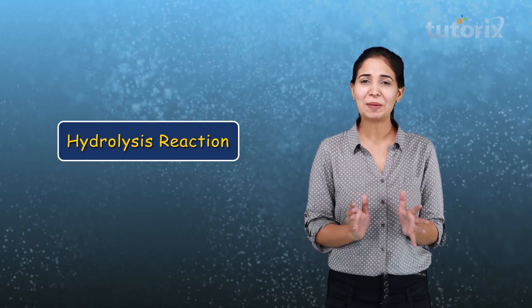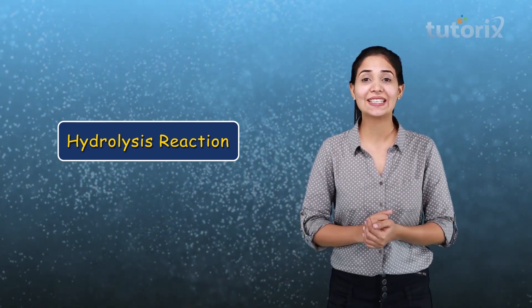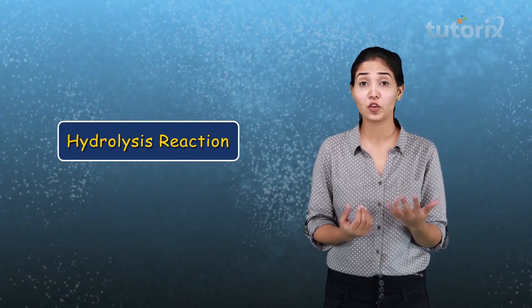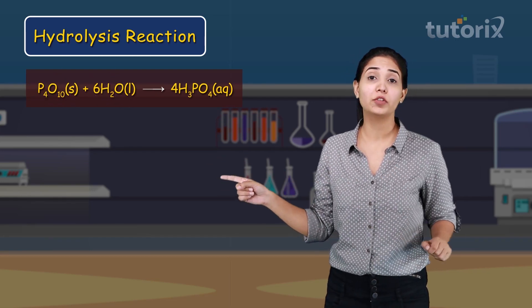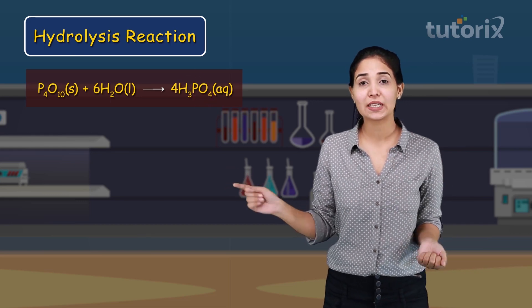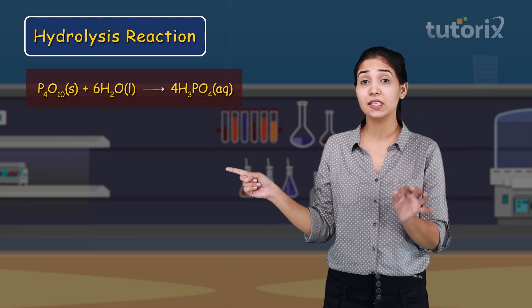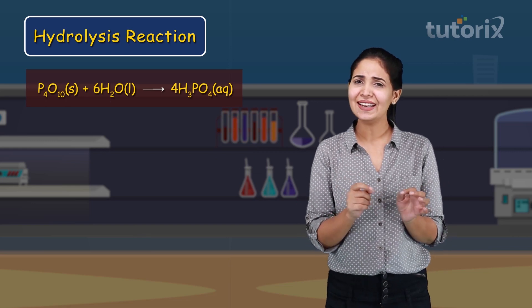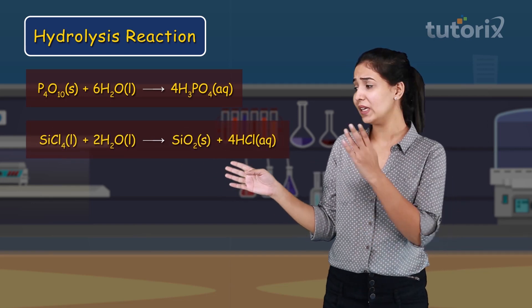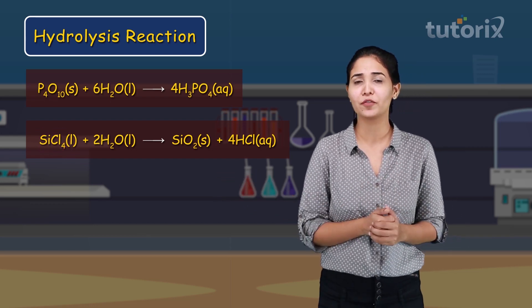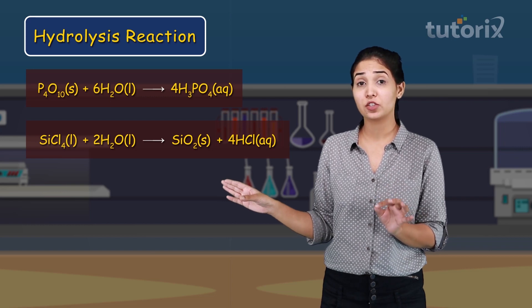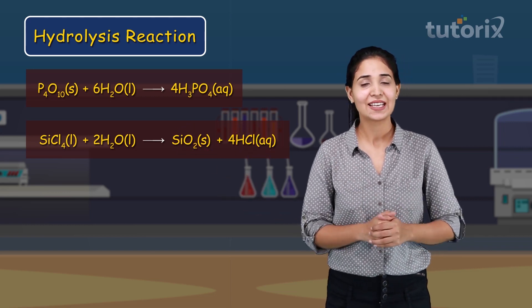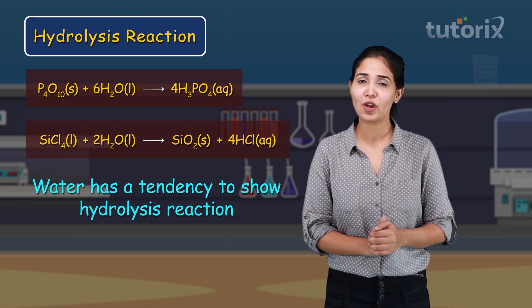Next is the hydrolysis reaction. Some compounds get hydrolyzed with water, leading to different types of acids or oxides. For example, the oxide of phosphorus reacts with water to form H₃PO₄ — phosphoric acid. Another example: SiCl₄ (silicon tetrachloride) reacts with water to form silicon dioxide and hydrochloric acid. So water has a tendency to show hydrolysis reactions.